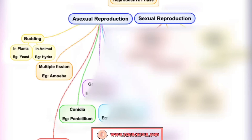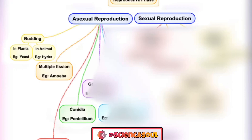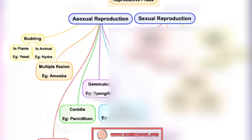Next is conidia — for example, Paramecium. These are asexual spores that are borne externally to the cells that produce them. Next is gemmules — for example, Spongilla. These are the internal buds found in sponges and are involved in asexual reproduction.